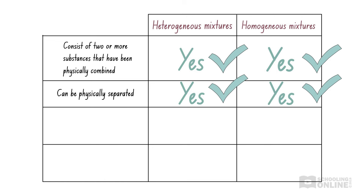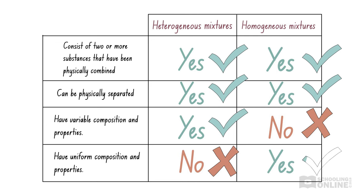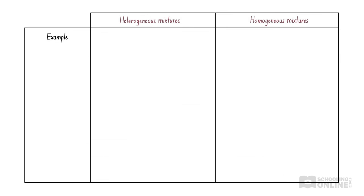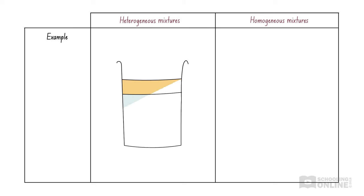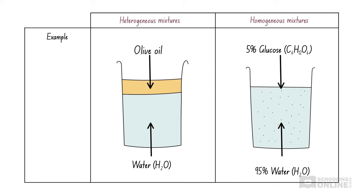On the other hand, heterogeneous mixtures have variable composition and properties, while homogeneous mixtures have uniform composition and properties. As an example of a heterogeneous mixture, we have drawn a mixture of liquid olive oil and liquid water. The olive oil and water settle into two layers, as water is denser than olive oil. As an example of a homogeneous mixture, we have drawn a mixture of glucose and water. The solid glucose dissolves in liquid water to form a solution. Glucose is present in smaller amounts, so it is the solute. The solution is mostly water, so water is the solvent.